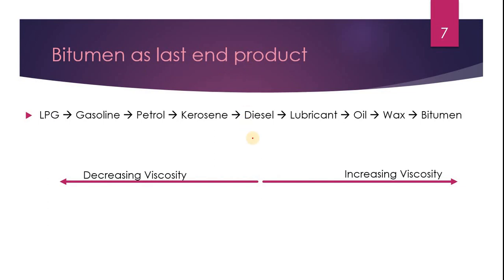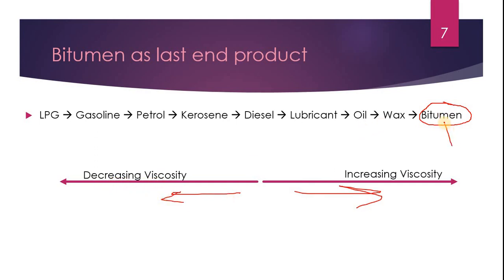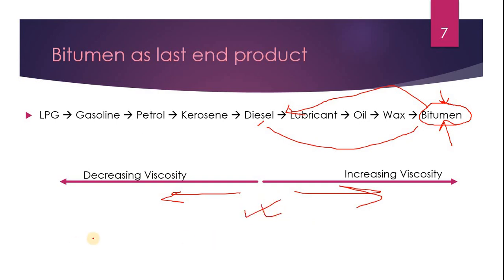Bitumen is the last end product obtained from crude oil during fractional distillation. It is the last product in the series with increasing viscosity. Bitumen has the highest viscosity, but due to this high viscosity it is difficult to apply alone. So it is mixed with another liquid of lower viscosity to make the combination less viscous, which means more flow and easier penetration through the aggregate.